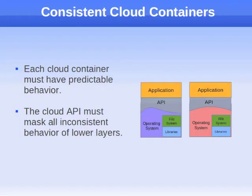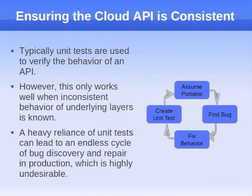Second, one of the defining characteristics of a cloud container is that the virtual machines are uniform commodities. That means that a programmer can predict how a virtual machine will behave. However, our users run a large number of different operating systems and device types. To prevent portability problems from occurring, we developed new testing techniques to validate the portability of our platform.